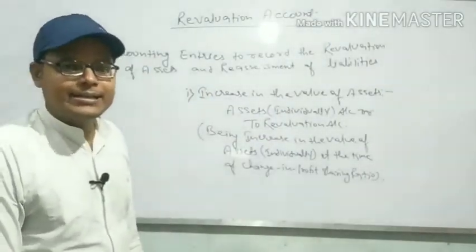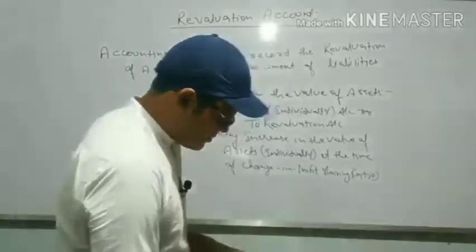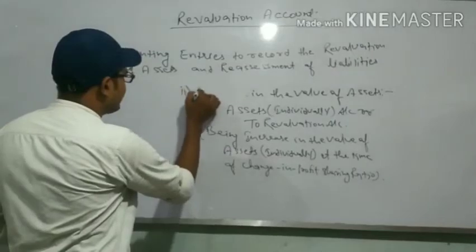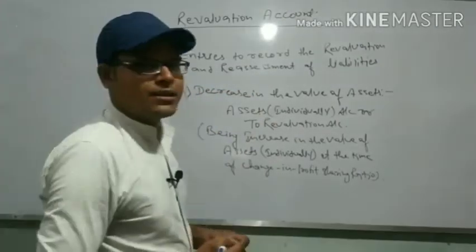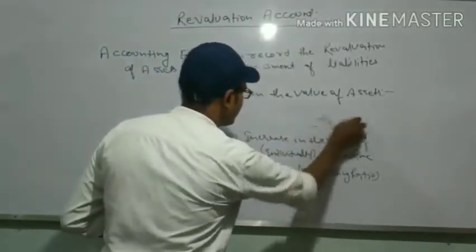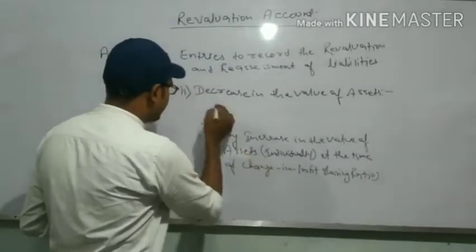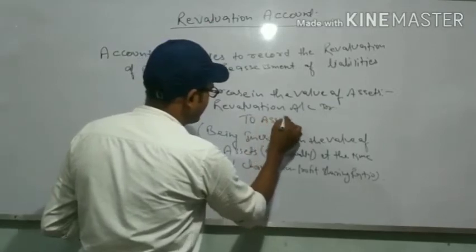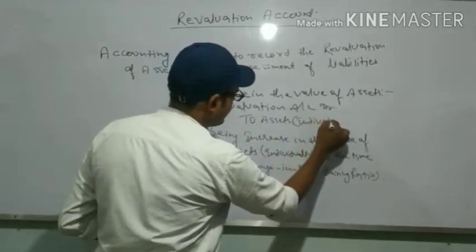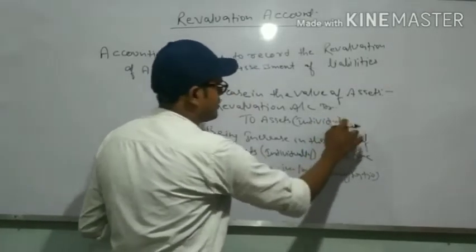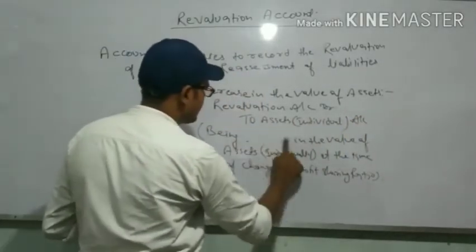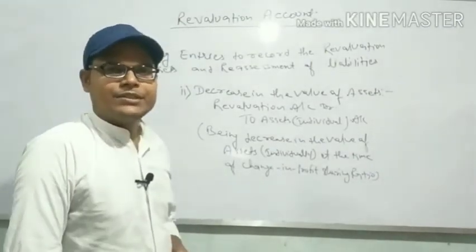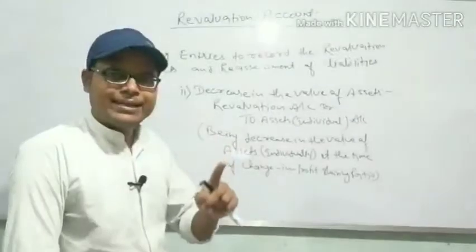The second journal entry is for decrease in the value of assets: Revaluation Account Dr. to Assets Account (individual asset) — being decrease in the value of assets at the time of reconstitution of the firm or at the time of change in profit sharing ratio.